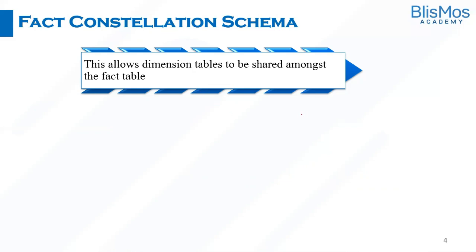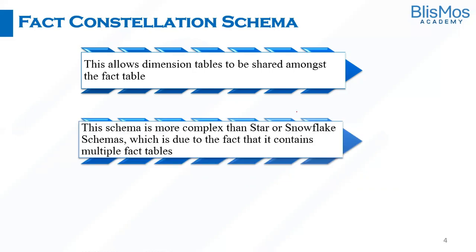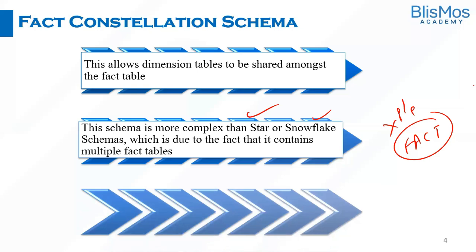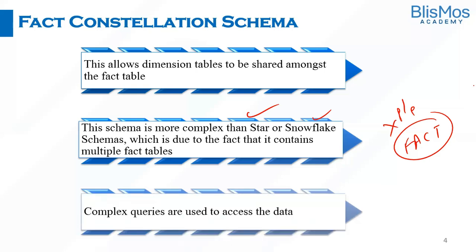Fact constellation schema allows dimension tables to be shared among different fact tables. There is a need to connect the multiple fact tables and dimension tables. This schema is definitely more complex than star schema or snowflake schema — because of the multiple fact tables, there will be multiple dimension tables surrounding them, which adds to the complexity.